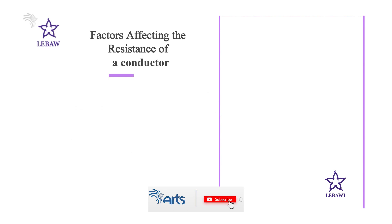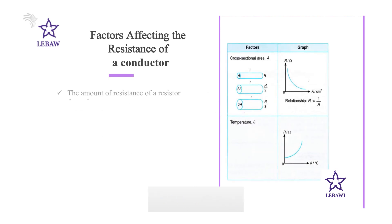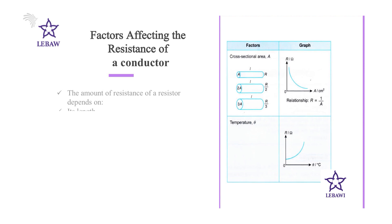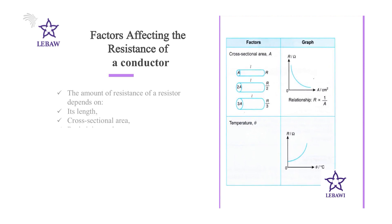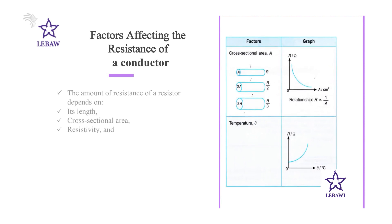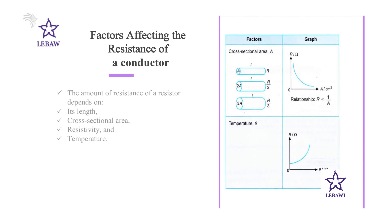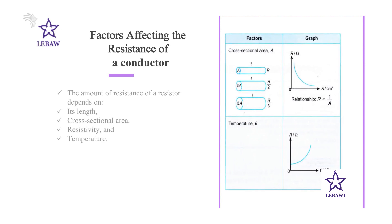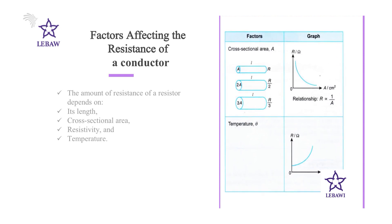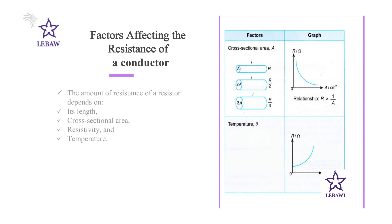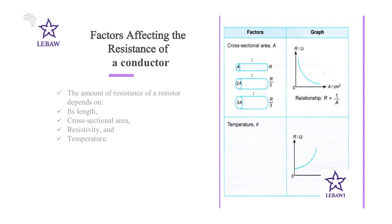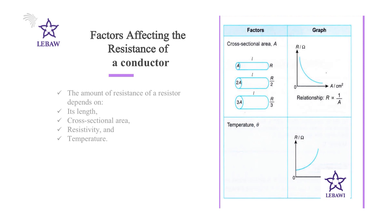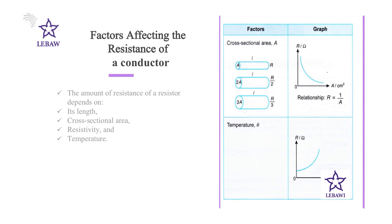There are four factors that affect the resistance of a conductor. These are the length of the conductor, the cross-sectional area of the conductor, the resistivity of the conductor, and finally temperature. The length of the conductor directly affects the resistance. The greater the length of the conductor, the larger the resistance, and the smaller the length, the smaller the resistance.